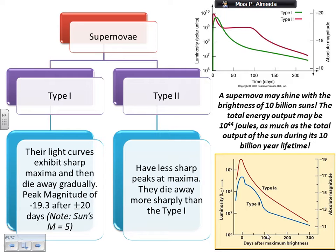The light curves exhibit a very sharp maximum — suddenly it's very, very bright and then it gradually dies away. The peak magnitude at that sharp maximum is about minus 19.3, which is quite high. For comparison, the Sun's absolute magnitude is about 4.77. So a peak magnitude of minus 19.3 is enormous, because as you know, more negative numbers mean a brighter star — in this case, a brighter explosion. This peak magnitude stays for about 20 days.